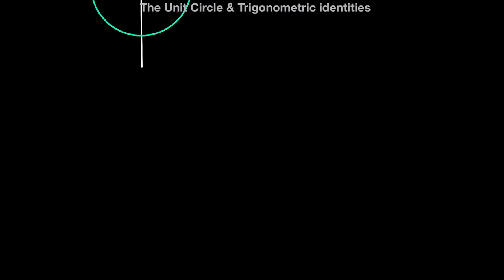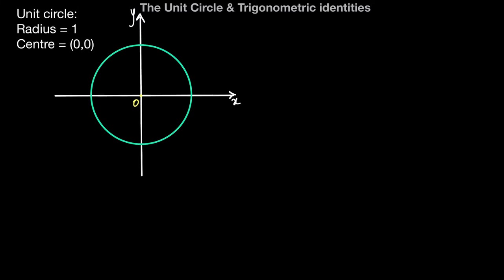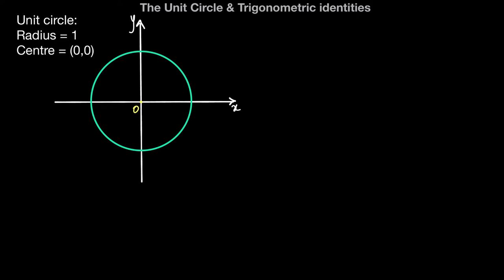In this video we're going to talk about the unit circle and trigonometric functions. The unit circle is defined as a circle with radius 1 unit and center point (0, 0) — in other words, the center point of the unit circle is the origin. Here we have the unit circle with center point (0, 0) and a radius of 1 unit.